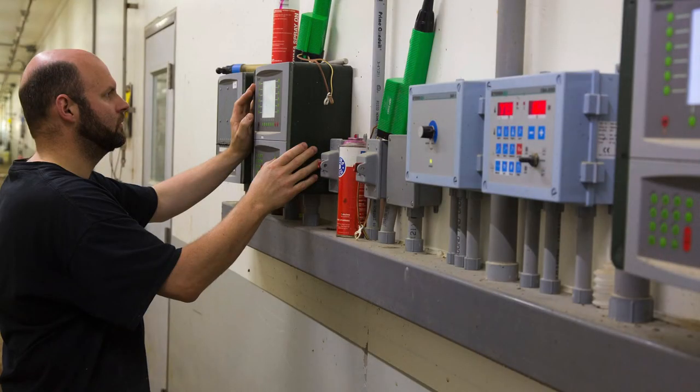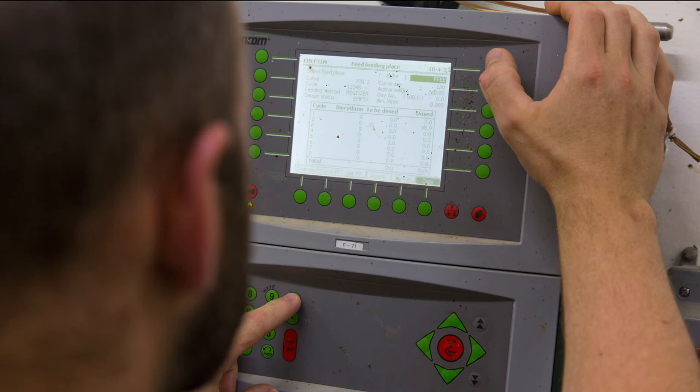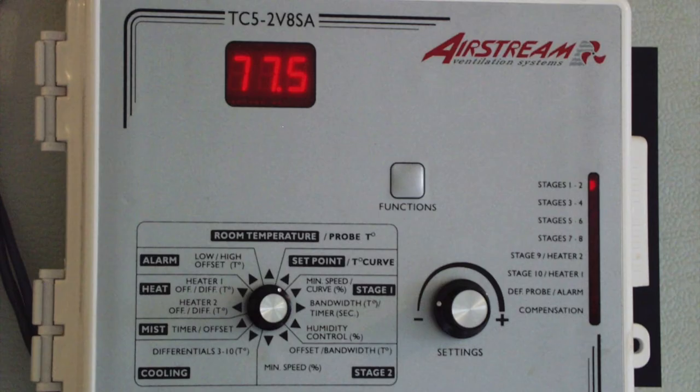The ventilation system will regulate the temperature inside the barn with the use of controls, similar to how a home thermostat is used to control heat and air conditioning in a home or office.